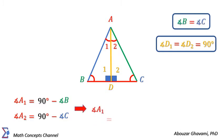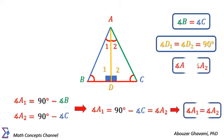Therefore, angle A1 is equal to 90 degrees minus angle C, which is equal to angle A2. Thus, we have angle A1 is equal to angle A2. That shows altitude AD is also bisector of angle A.